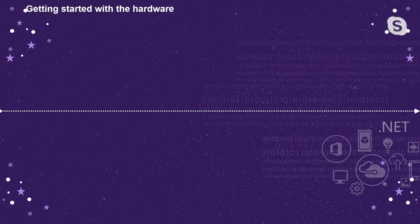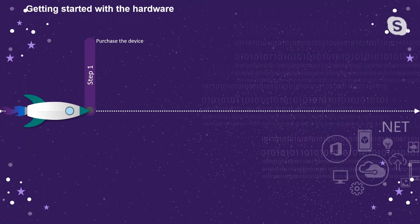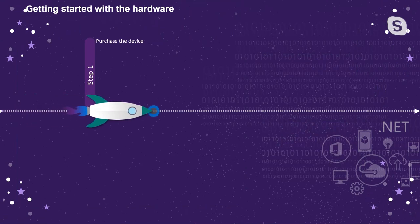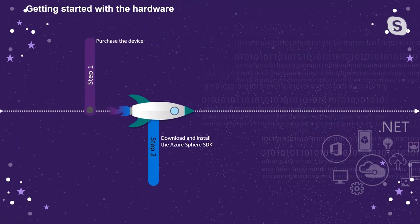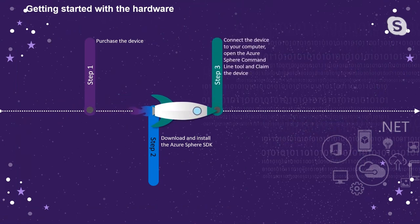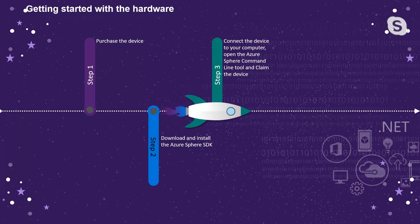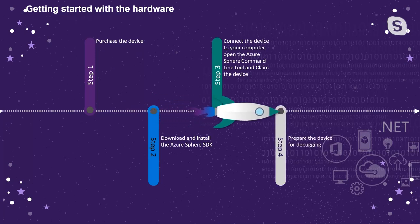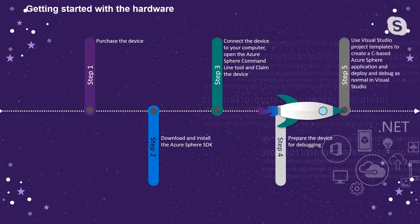In order to get started with the hardware, the first thing you need to do is purchase the device. Second, download and install the Azure Sphere SDK. Third, connect the device to your computer, open the Azure Sphere command-line tool, and claim the device. Lastly, prepare the device for debugging, which I'll show you in a moment. We'll also use Visual Studio project templates to create a C-based Azure Sphere application and deploy and debug it as a normal application in Visual Studio.